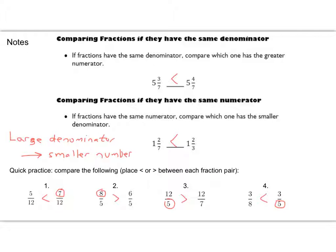Check these answers out. I circled the number that let me know which of these were greater. Because we had the same denominators, the greater numerator tells me that number is greater. Here we have the same numerators, so the smaller denominator makes for the larger overall number. Make sure you got those down, and then go ahead and turn to the next page.